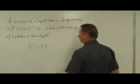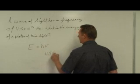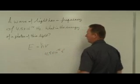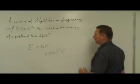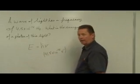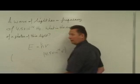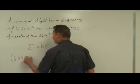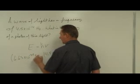The frequency of light is 4.5 times 10 to the negative 14 cycles per second — we'll write it as s to the negative 1, or you can put it in the denominator, it doesn't really matter — multiplied by Planck's constant. Planck's constant has a numerical value of 6.63 times 10 to the negative 34 joule seconds.